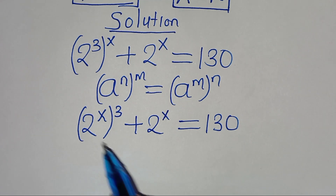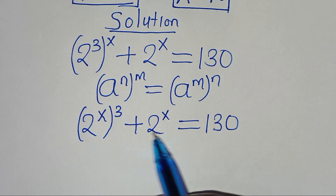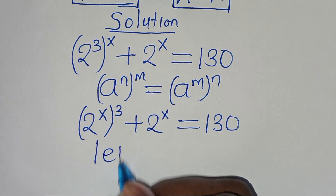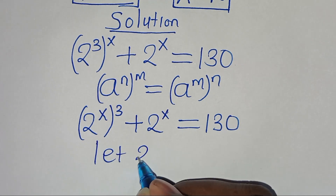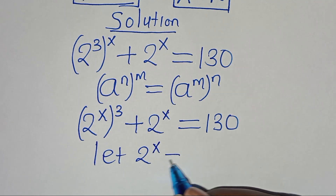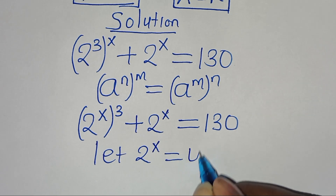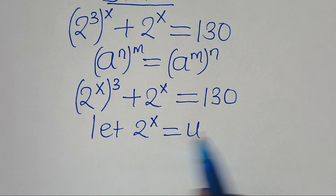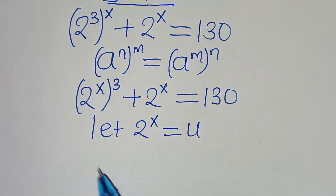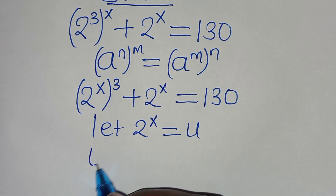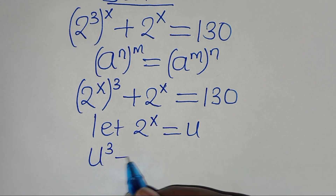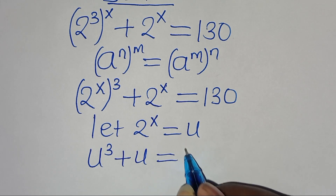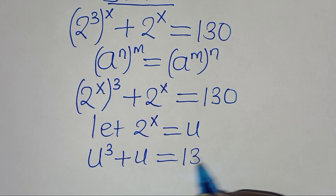The next step is that 2 to the power of x is common here, so we can let 2 to the power of x be equal to u. Substituting u into this equation, we have u to the power of 3 plus u, and this is equal to 130.